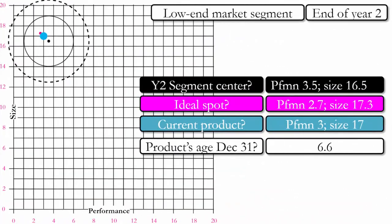At the end of year two, our product is now very close to the ideal spot and is 6.6 years old, which is quite close to the ideal age of seven. This could mean that demand for our product will be quite high this year. However, if we do a revision now we would cut the age in half to 3.3, so it's probably still too early to do a revision.